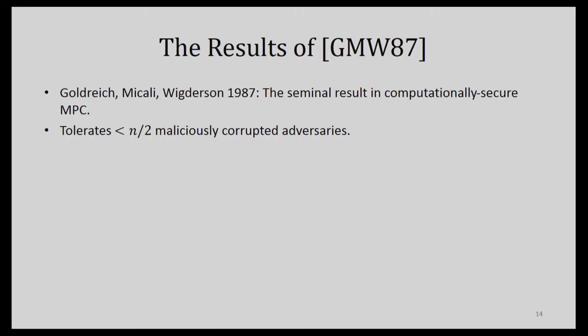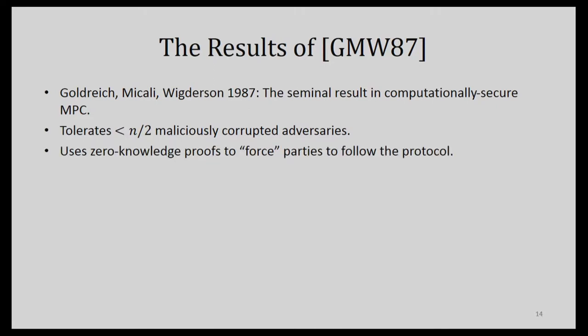The early result in the computational security model is by Goldreich, Micali, and Wigderson. It tolerates up to n over two maliciously corrupted adversaries but doesn't need a broadcast channel — it does everything with cryptography. The way it achieves malicious security, in contrast to verified secret sharing, is by using zero-knowledge proofs. You can use that to force the parties to prove to each other that they have followed the protocol directly.